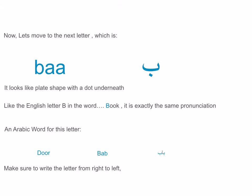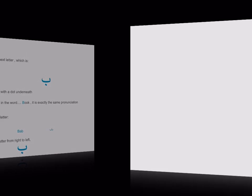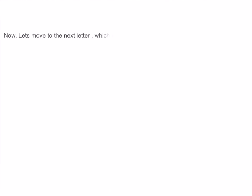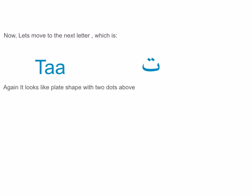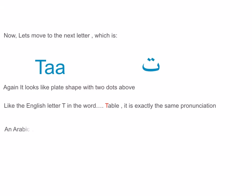Now let's move to the next letter, which is Ta. It looks like a plate shape with two dots above, like the English letter T in the word 'table' — it's exactly the same pronunciation. An Arabic word for this letter would be 'toot,' which means 'blackberry.' Make sure to write the letter from right to left.